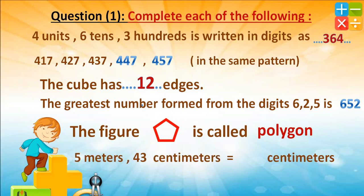5 meters 43 centimeters equals 543 centimeters. Why? Because we convert the 5 meters to centimeters, and as we said before, one meter equals one hundred centimeters, so five meters equals five hundred centimeters. Five hundred plus 43 equals five hundred forty-three.